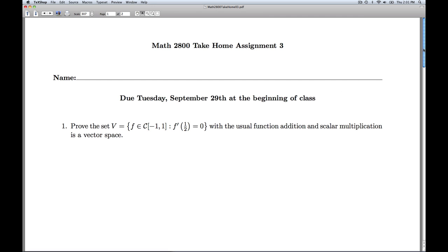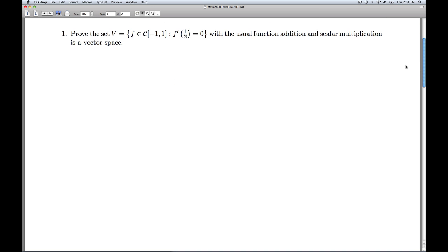Hi folks, this is linear algebra take home 3. We're asked to prove that the set of all functions in C[-1,1], so all continuous functions on the closed interval [-1,1], whose derivative at 0 exists and is 0, with the usual function addition and scalar multiplication is a vector space.